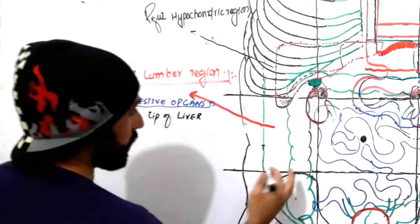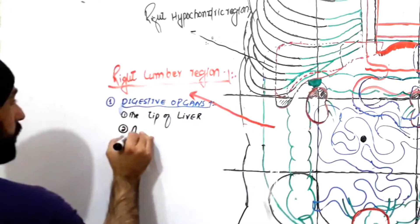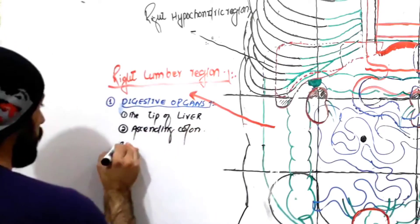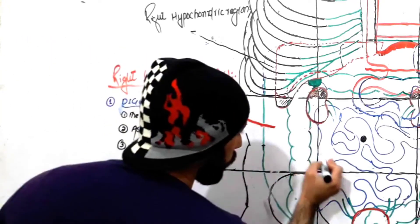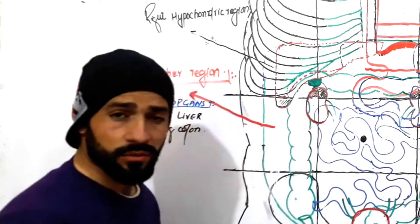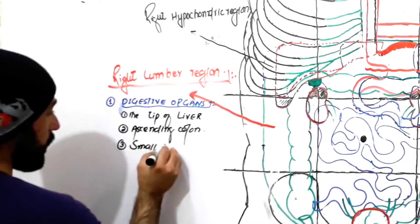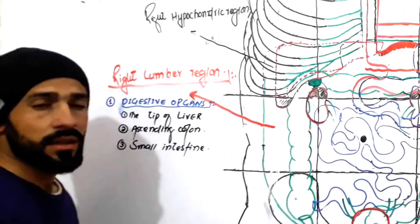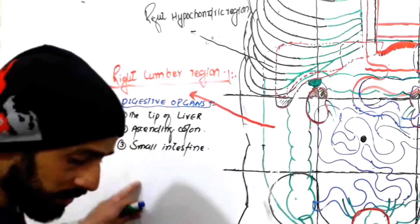The next important digestive organ present in the right lumbar region is the ascending colon. And the third structure related to the digestive system found here is parts of the small intestine — not all parts, but a very little part of the jejunum is found in the right lumbar region. So these three things — liver tip, ascending colon, and jejunum — are the digestive organs in the right lumbar region.